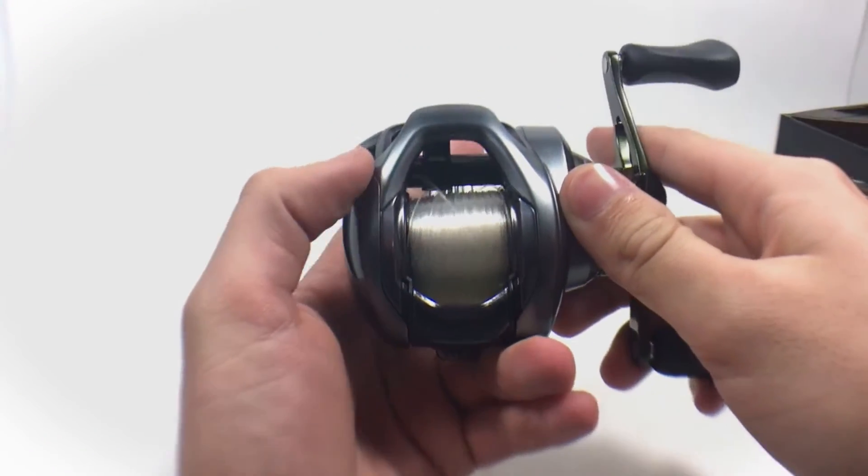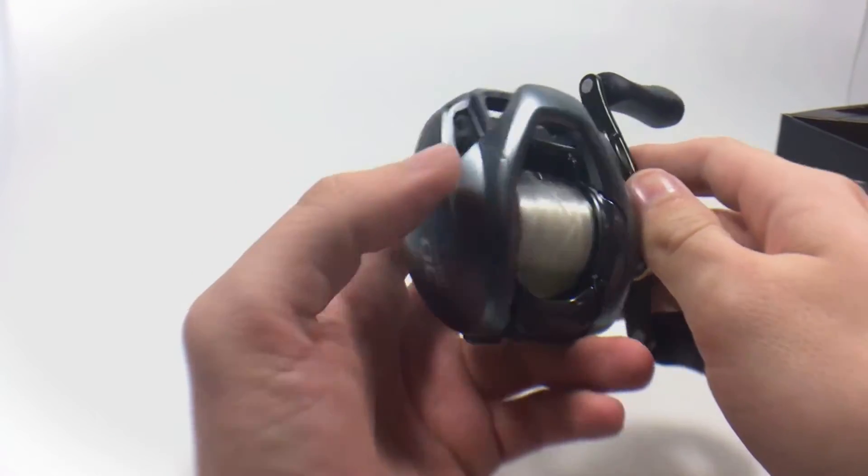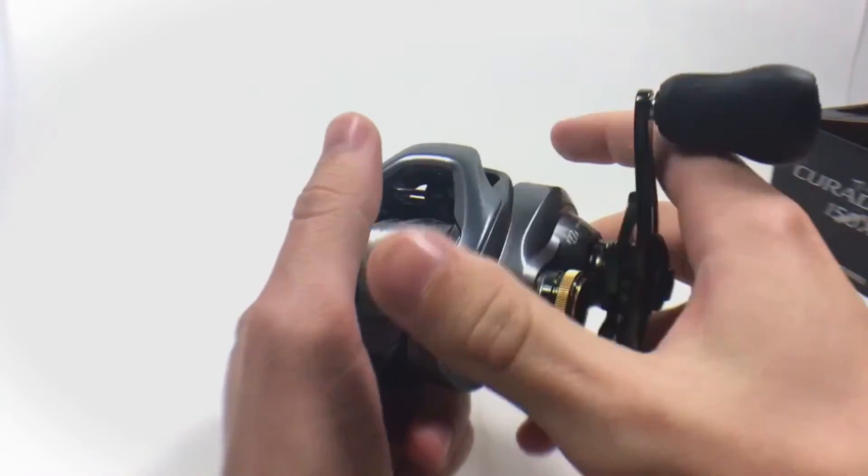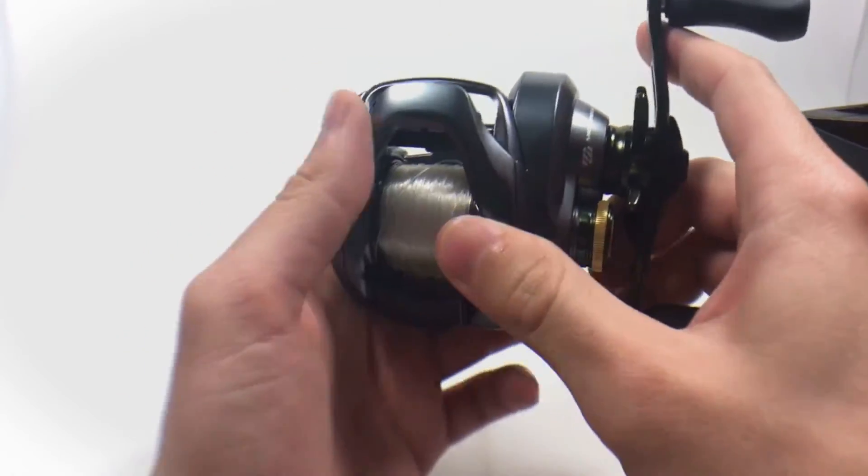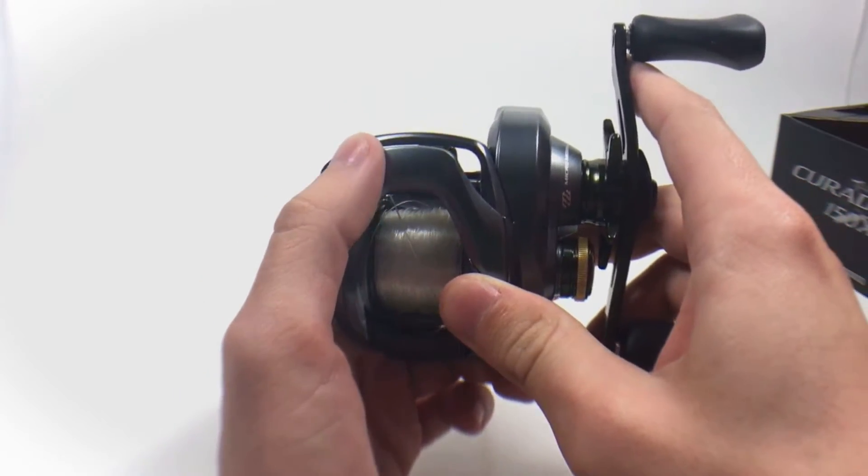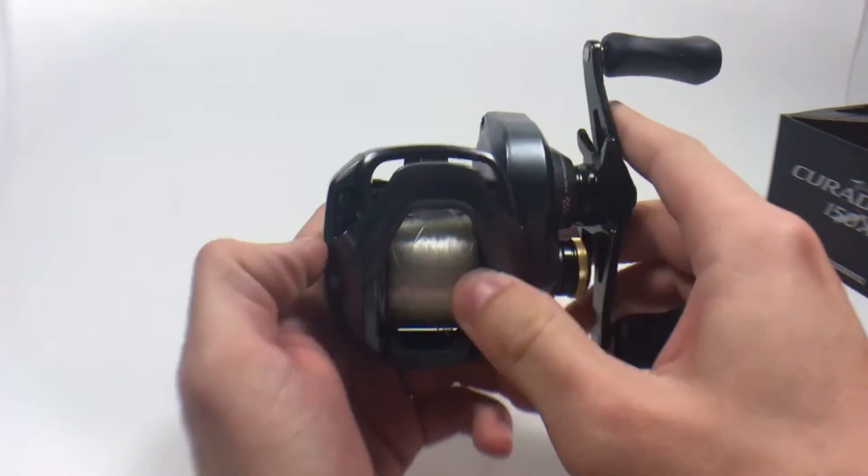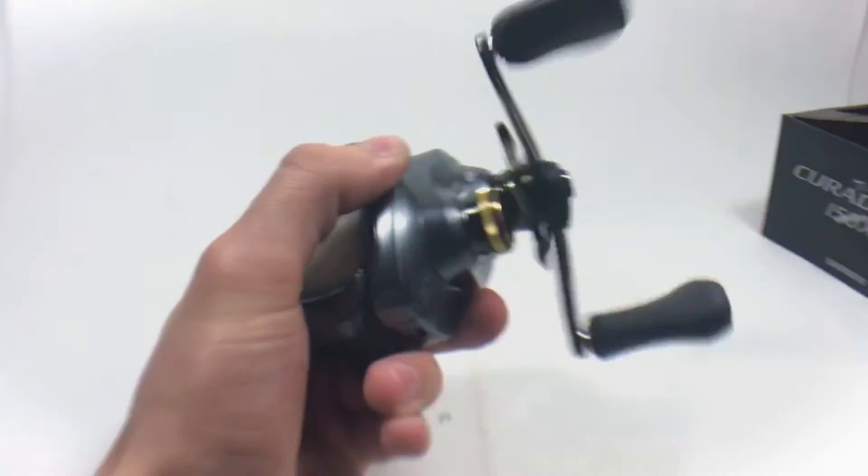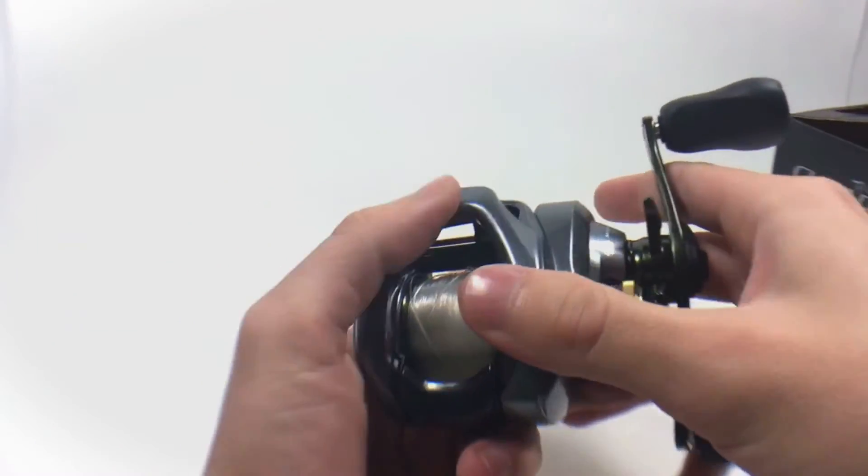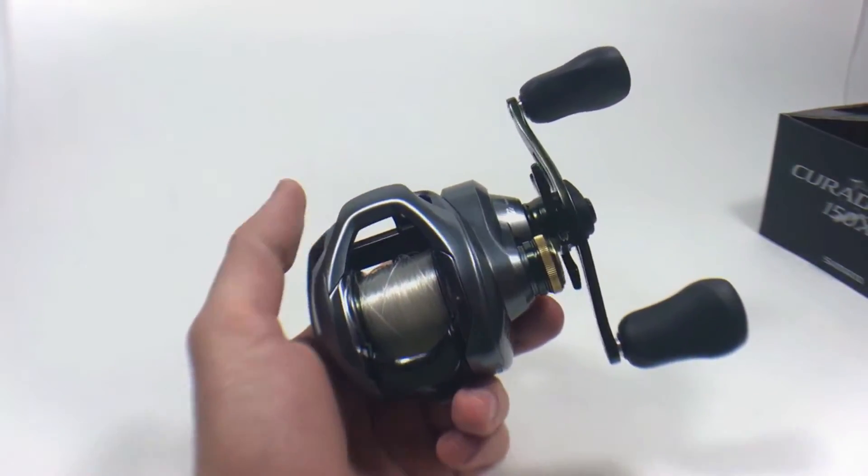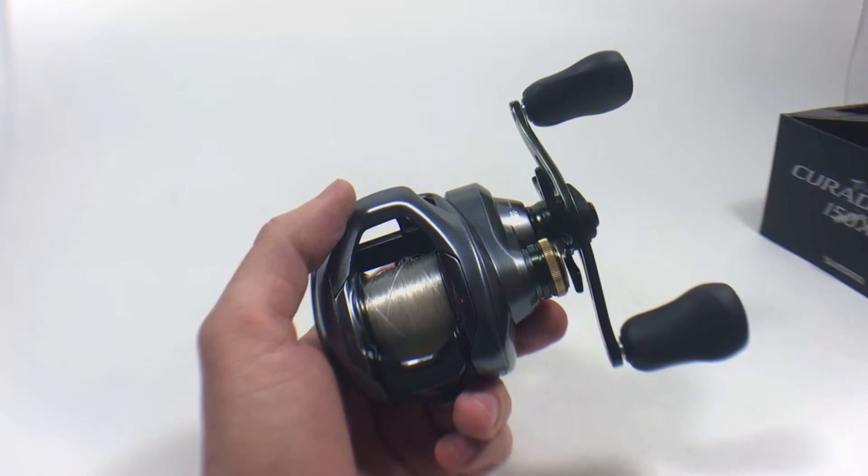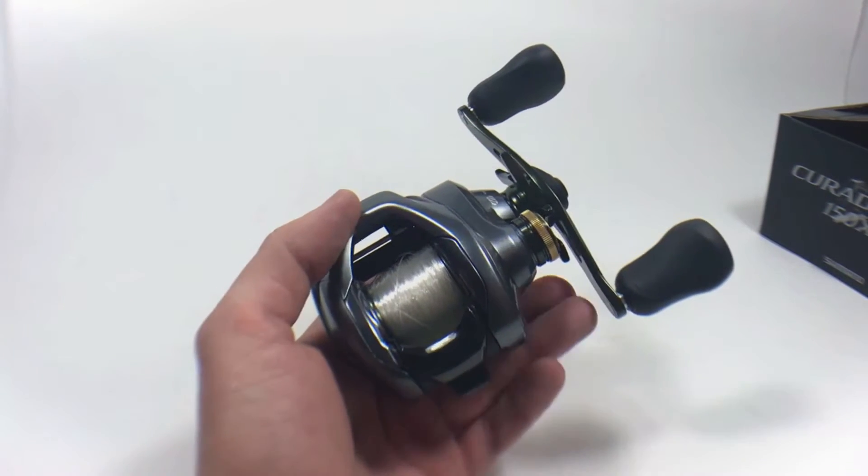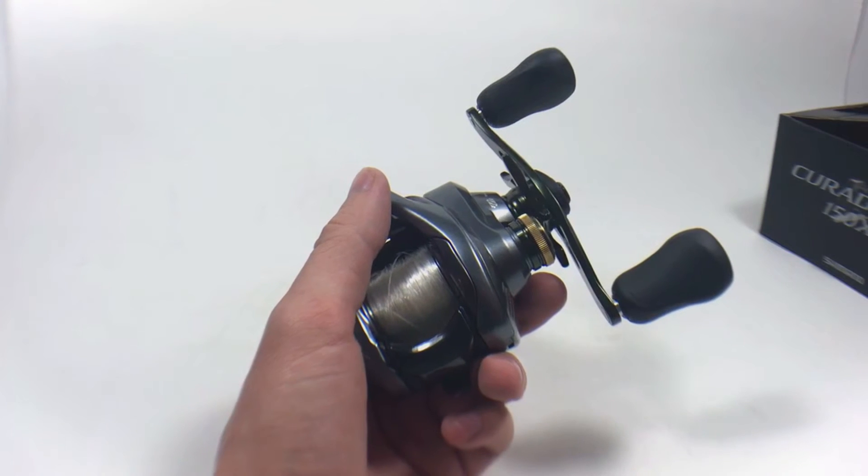So up next we have the Shimano Curado DC. This reel cost me about $279 as an 8.5 to 1 gear ratio with an aluminum frame, six ball bearings plus one roller bearing, and the DC brake. For those of you that don't know, DC is basically a computer chip that acts as the reel's braking system. That is very scientific, I don't know how the hell they figured that out.